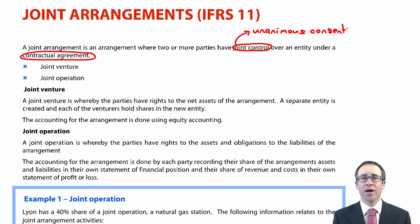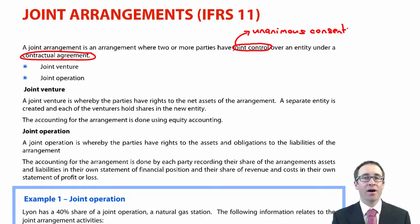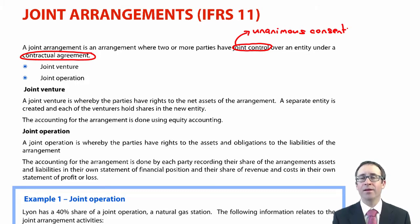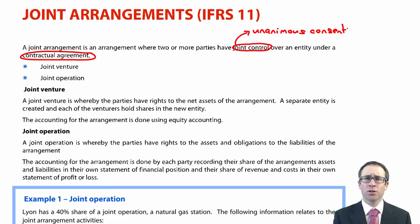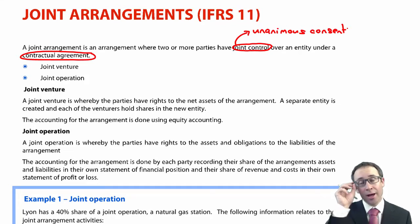We need to think about the types of joint arrangements that give you joint control under the accounting standard IFRS 11. The way it could be examined is that there could be a small numerical aspect in question one part A as part of your group accounts. Alternatively, the examiner could include it as a question two or three discussing the different styles of joint arrangement — whether that's a joint venture or a joint operation — and how we account for either of them.